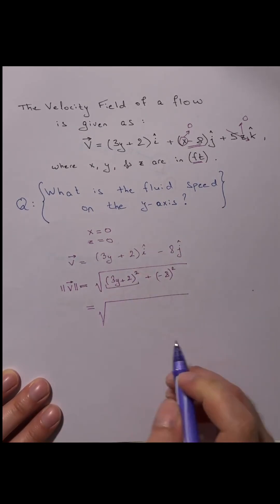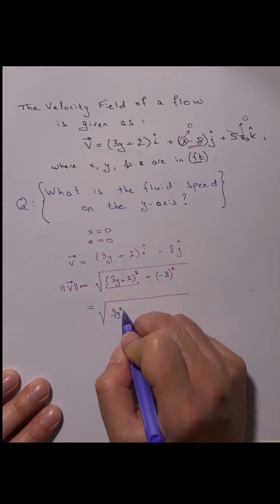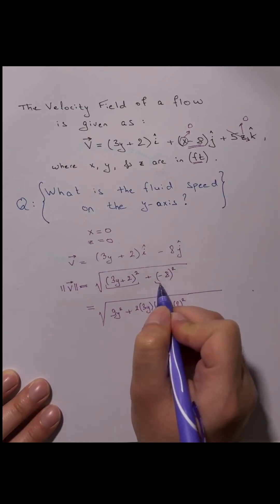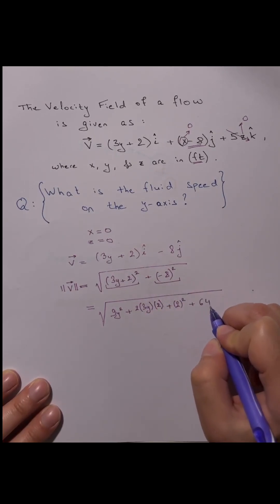Apply a plus b squared to 3y plus 2 squared, which becomes 9y squared plus 2 times 3y times 2 plus 2 squared, and minus 8 squared is plus 64.